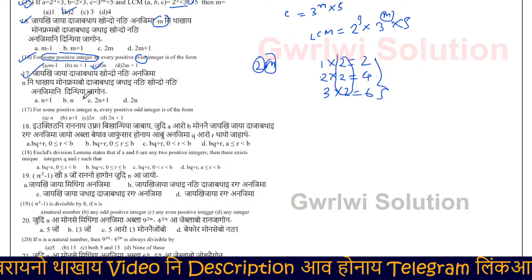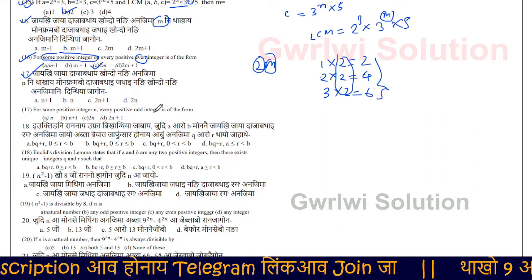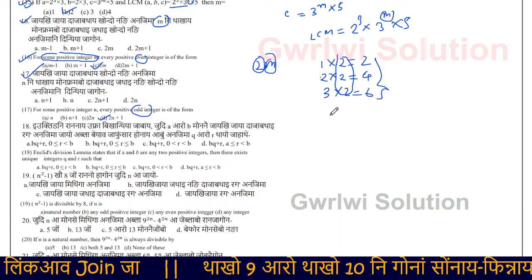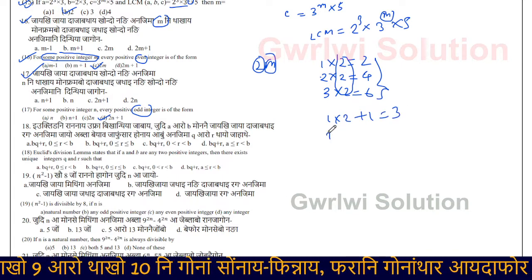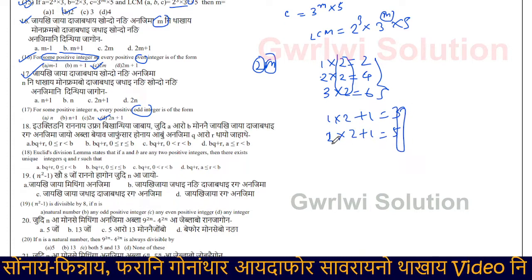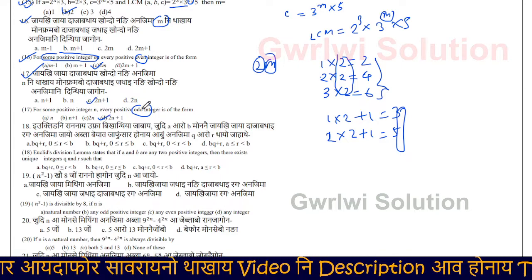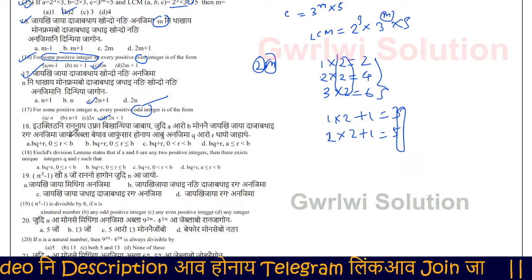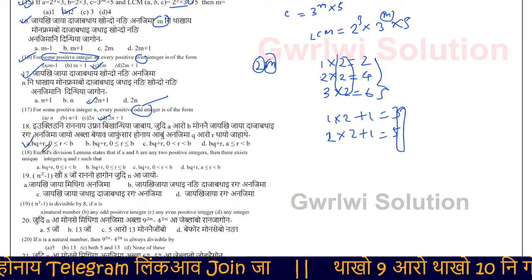In question 17, the question is: for some positive integer, and every positive integer, you can see the answer is 2n plus 1. That means the answer is 2n plus 1, which is equal to 3n plus 2. The answer involves 2 and 3. Try to answer using the Euclidean algorithm.